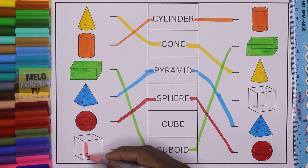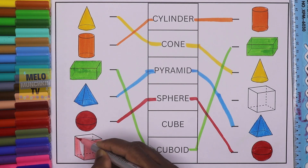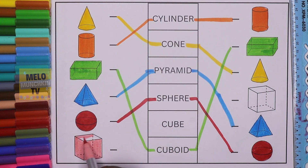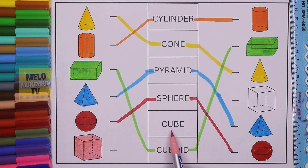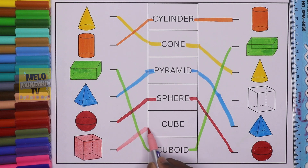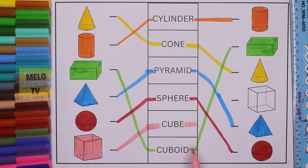Finally I'll take light pink color to color the cube — this is cube. Let's color it. So this is cube. I need to find out the name — only one name is remaining. This one is C-U-B-E — cube. I'll join it like this and here it is.